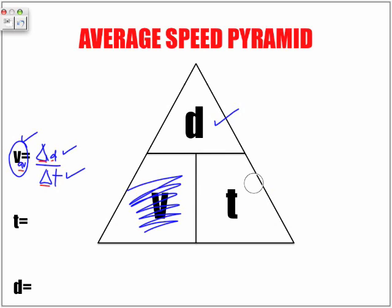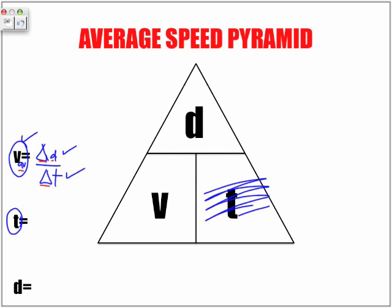Now let's look at the next one. We are trying to find our T value. To find T, we're going to cover up T. Notice we have D on top of V, which means to find our time, we're going to take our distance and divide it by our speed, because D is on top of V whenever we are trying to find T.